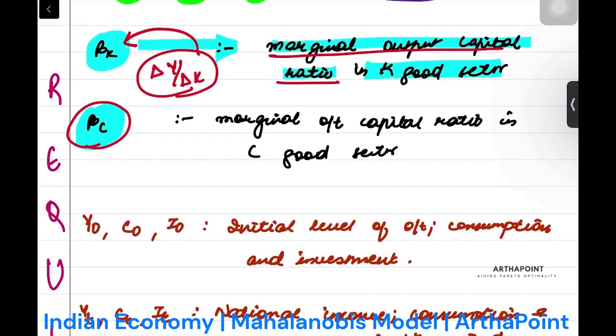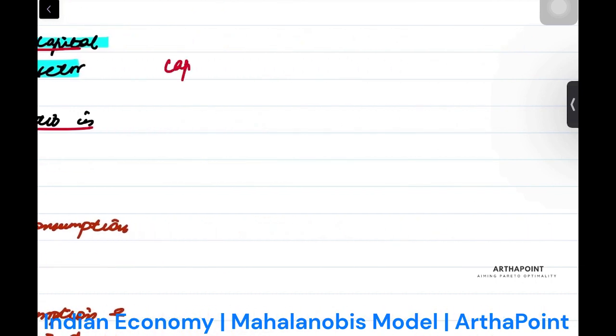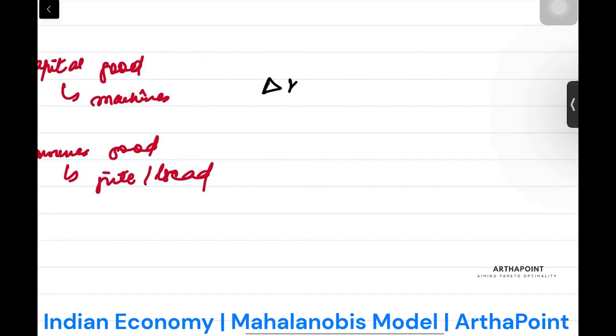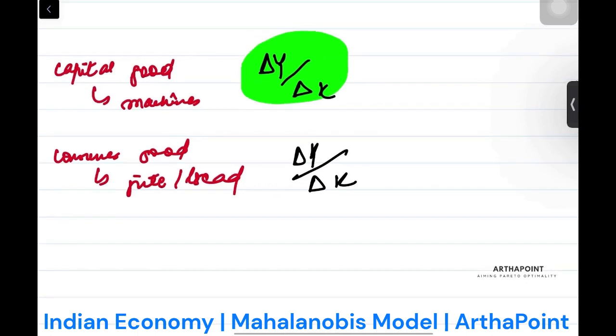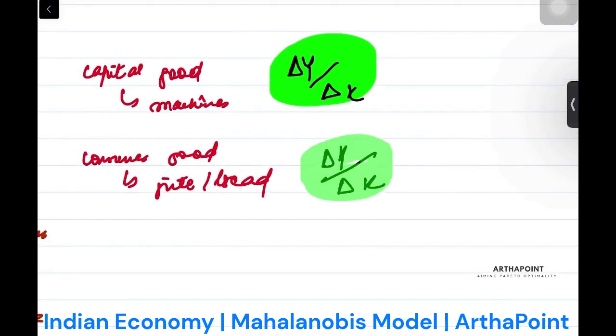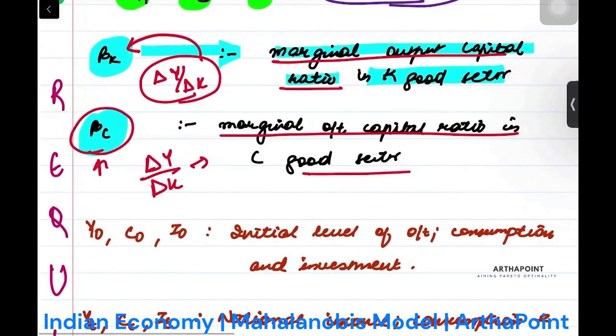Beta_k is the marginal output capital ratio in capital good sector, that means change in Y by change in K. Beta_c is marginal output capital ratio in the consumer good sector. If capital good sector produces machines and consumer good sector produces food or bread, when I change capital, the output of these sectors will change. How much does output change when I change capital? That is beta.